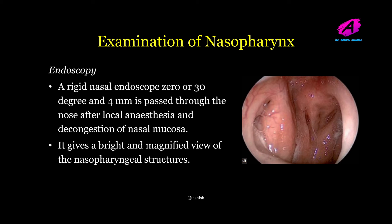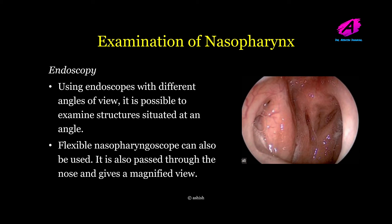For endoscopic examination of the nasopharynx, a rigid nasal endoscope — 0 or 30 degree, 4 millimeter — is passed through the nose after local anesthesia and decongestion of the nasal mucosa. It gives a bright and magnified view of nasopharyngeal structures including the choanal opening, the eustachian tube orifice laterally, the roof and posterior wall of the nasopharynx, and the fossa of Rosenmüller. Using endoscopes with different angles of view, it is possible to examine structures at various angles. A flexible nasopharyngoscope can also be used.